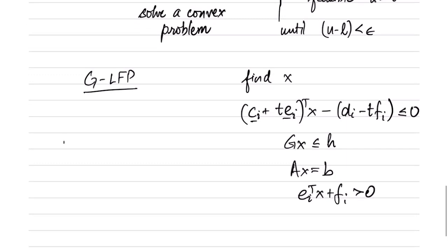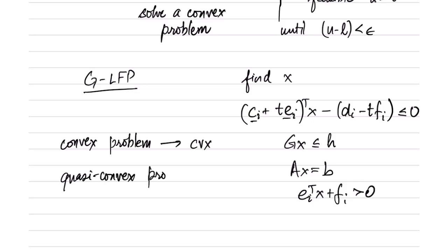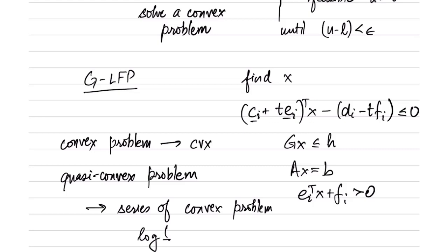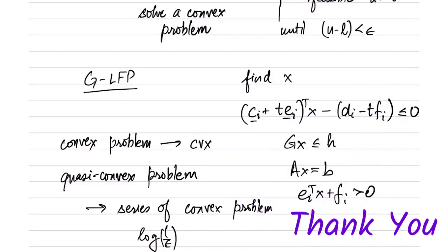Essentially, when you have a convex problem you use software such as CVX to solve it. When you have a quasi-convex problem, you solve it using a series of convex problems, and that series is not very long — just log(1/ε) iterations. If ε = 10^{−3}, that means solving about 10 convex problems instead of one. So quasi-convex problems are only slightly harder than convex problems.